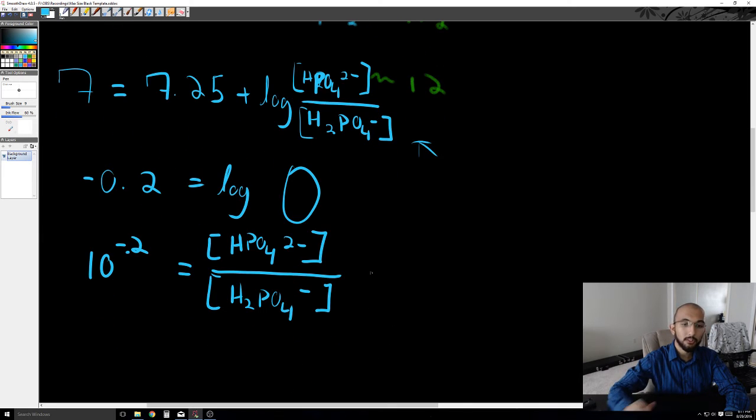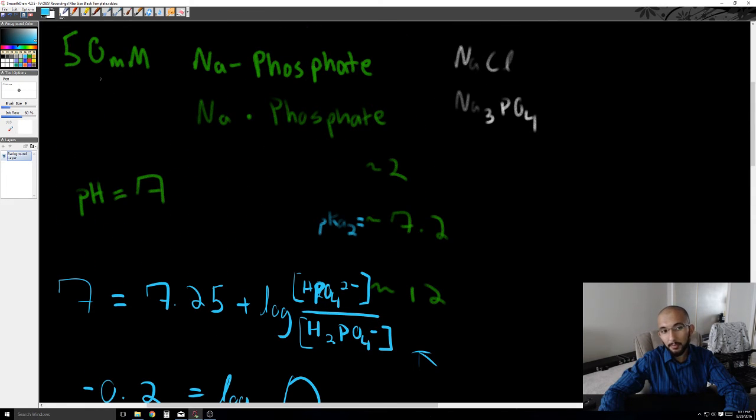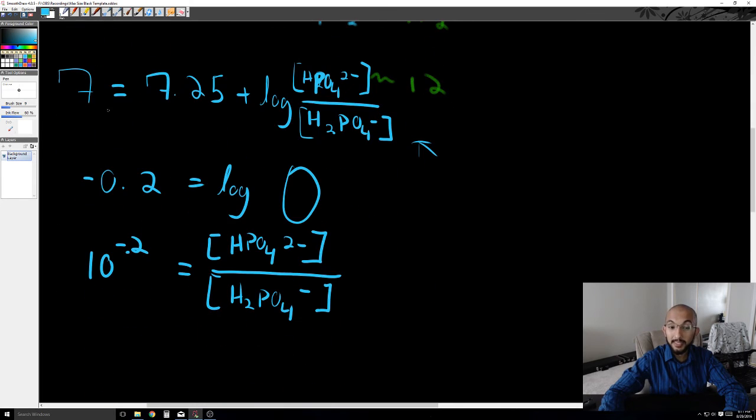And so now we have an algebraic equation with two variables, and what we want to do is set this up so that we only have one variable. Now because mass is conserved, we know that if we had a 50 millimolar concentration, the sum of the two concentrations must add up to 50 millimolar.